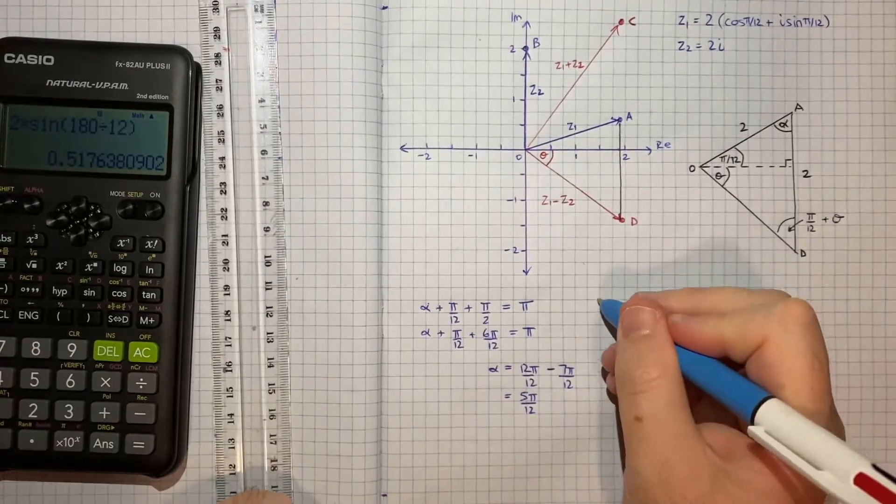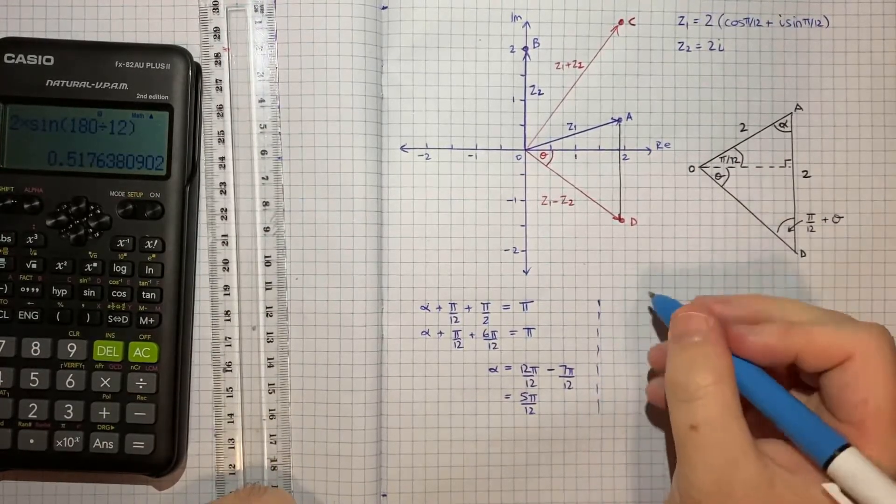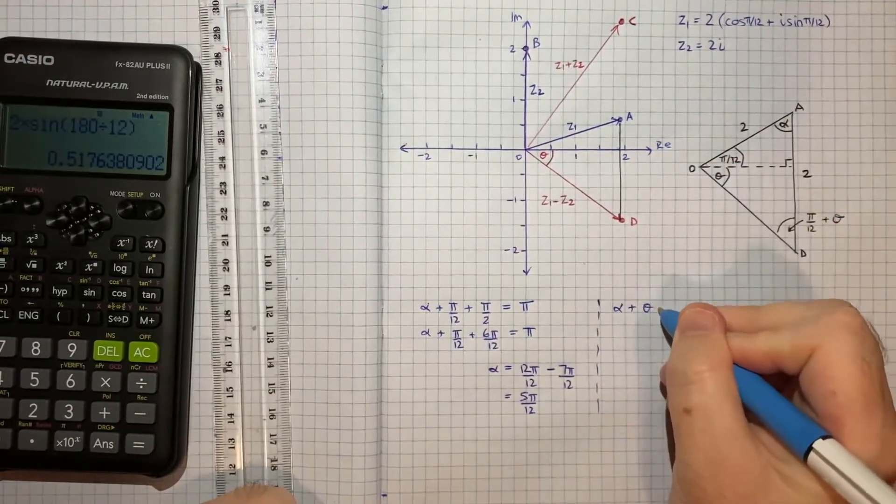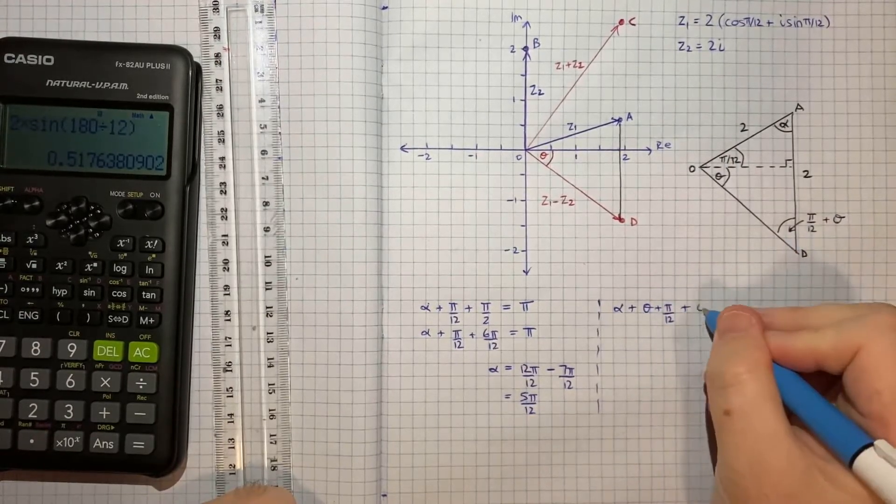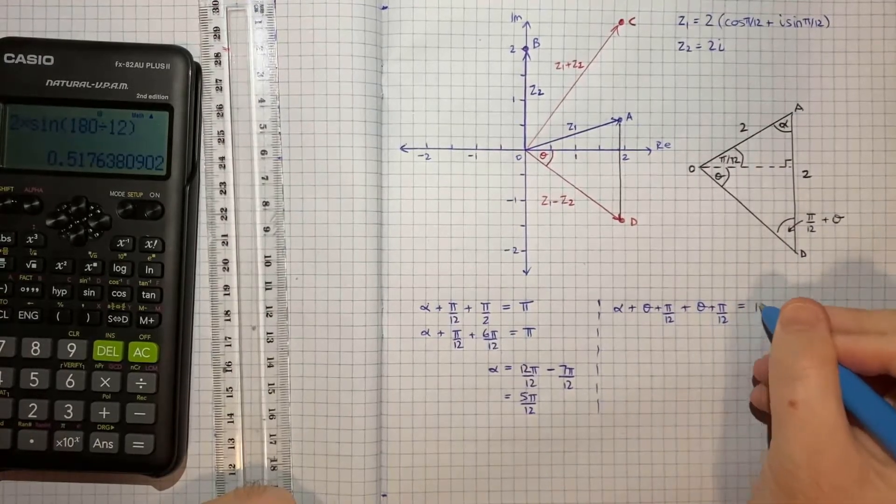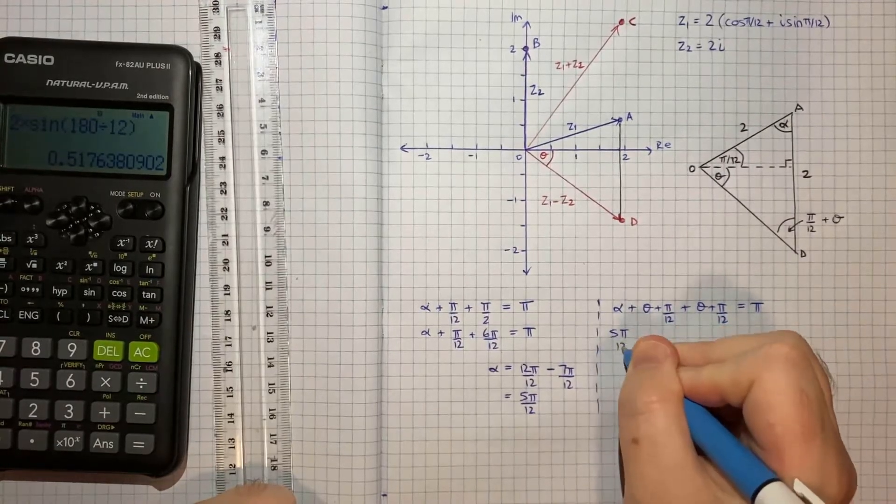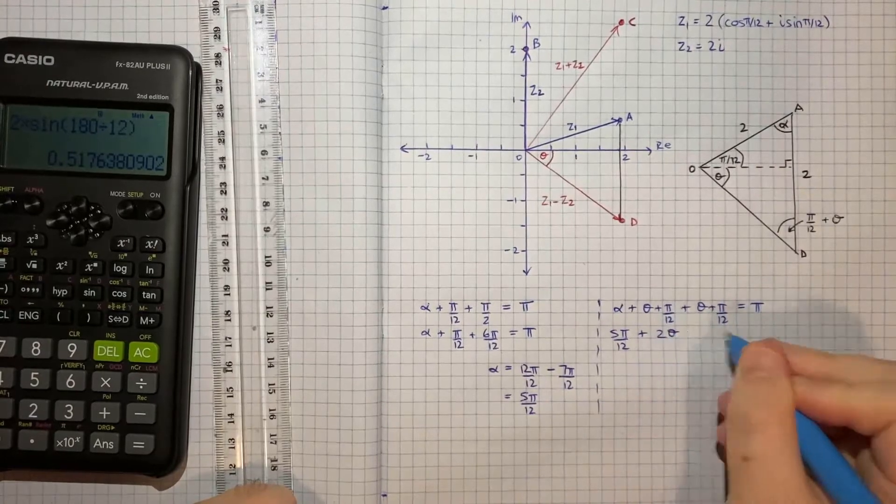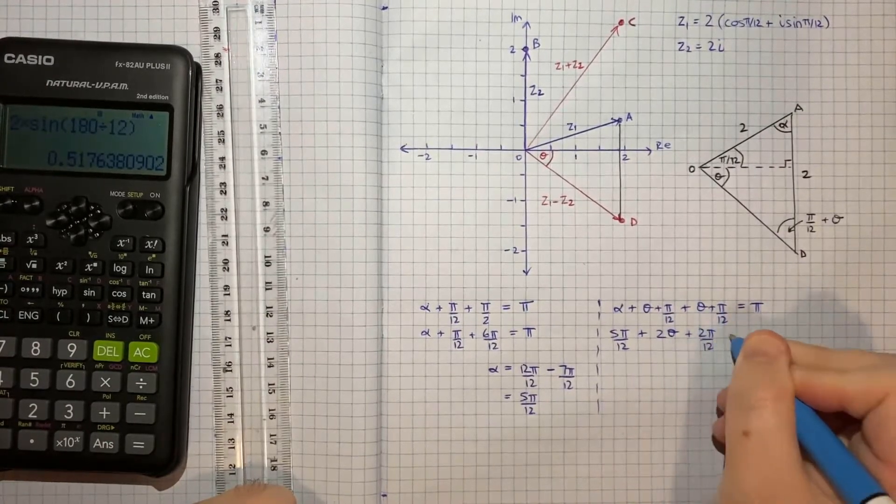So now that we have alpha, I can say that alpha plus theta plus pi on 12, plus theta plus pi on 12, all of that will add up to pi. So alpha, which we just found was 5 pi on 12, plus 2 theta plus 2 pi on 12, equals pi.